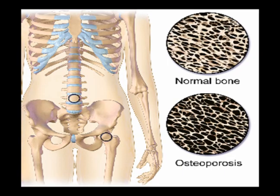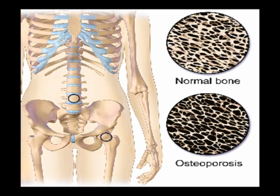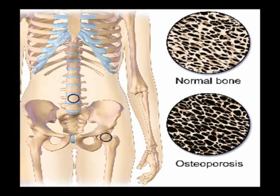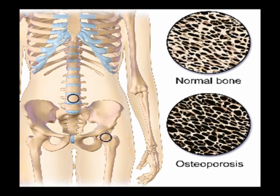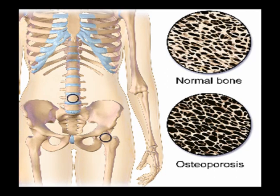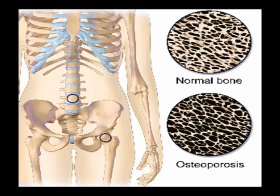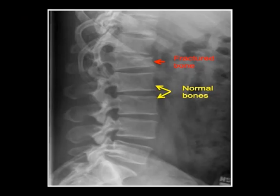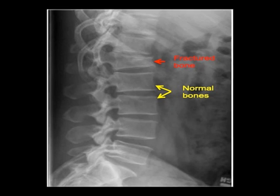Osteoporosis is caused by an imbalance of bone resorption and bone remodeling, leading to decreased skeletal mass. In most individuals, bone mass peaks in the third decade, after which bone resorption exceeds bone formation. Failure to reach a normal peak bone mass or acceleration of bone loss can lead to osteoporosis. Bone loss increases the risk of sustaining an osteoporotic fracture, leading to a significant decrease in quality of life with increased morbidity, mortality, and disability.